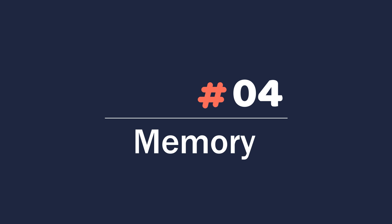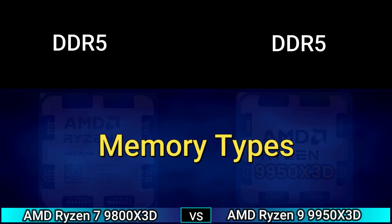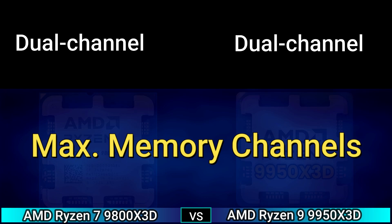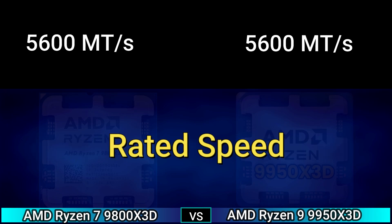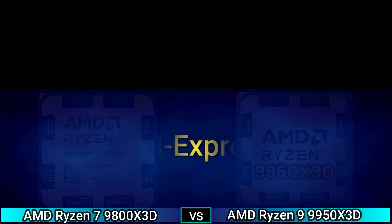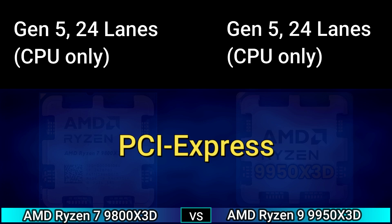Next, memory. Memory type DDR5, memory size 192 GB max, memory channels dual channel. Rated speed 5600 MT/s. ECC support yes, PCIe Gen 5 with 24 lanes, CPU only.